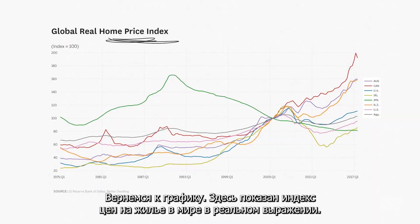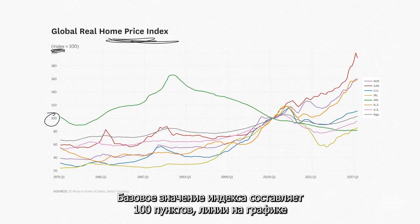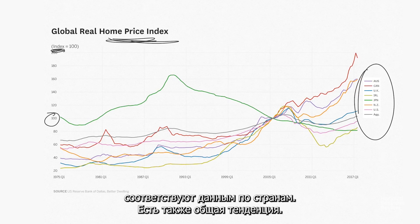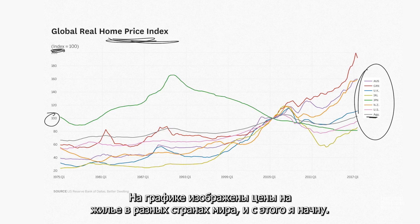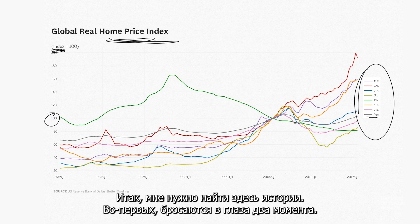Now we're back with a chart. This is the Global Real Home Price Index. The index is 100, and you see a bunch of lines for countries. There's a gray line in there that's the aggregate as well. This chart is really showing home prices in a lot of different places in the world, and that's where I'm starting — I want to find the stories in here.